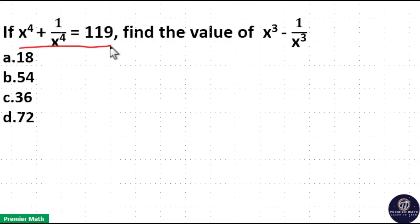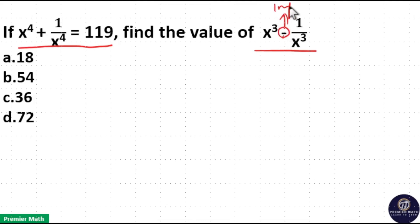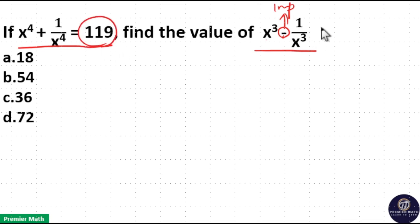If x raised to 4 plus 1 by x raised to 4 is 119, find the value of x cube minus 1 by x cube. Always be careful about the signs. To find x cube minus 1 by x cube, first I should find the value of x minus 1 by x, which I will get from the value of 119.